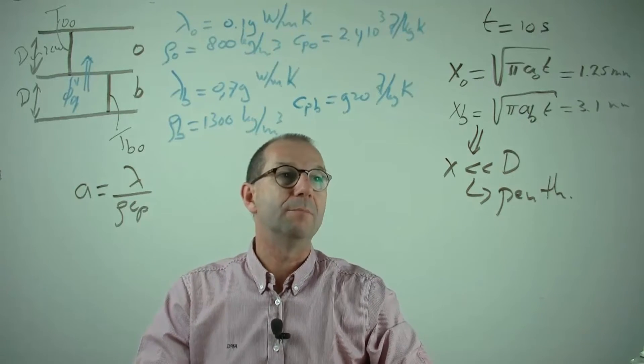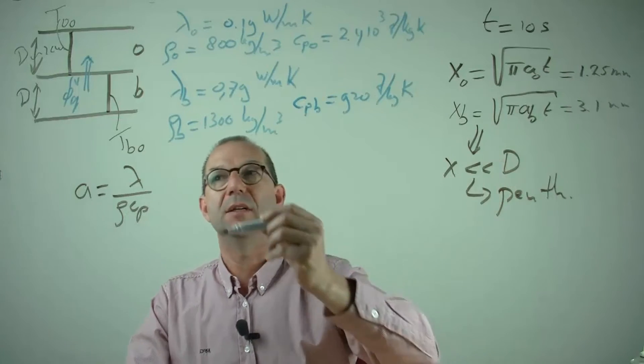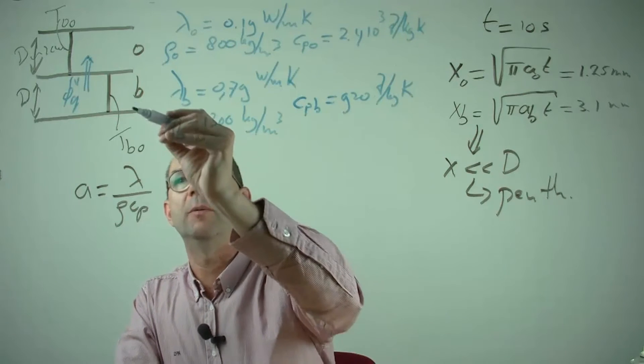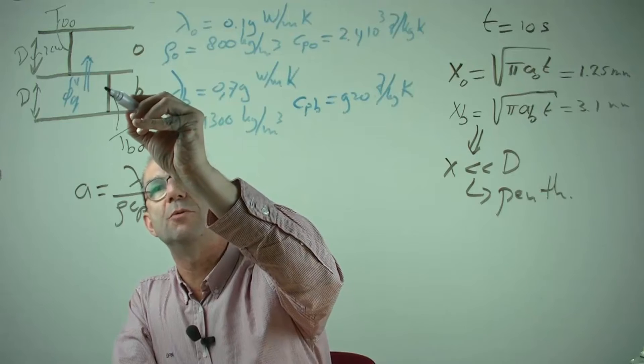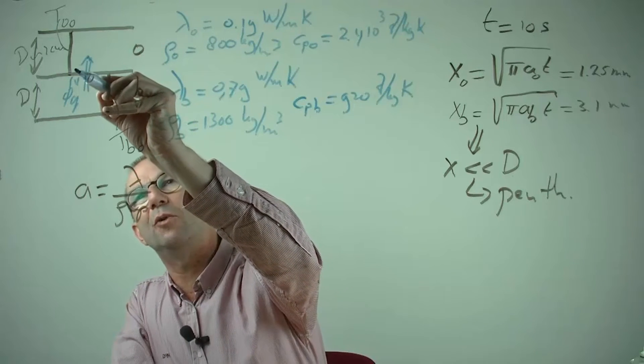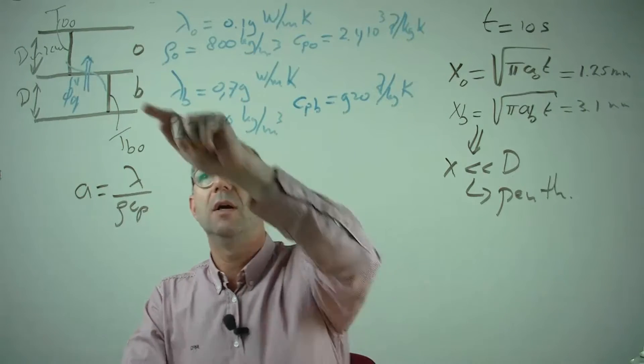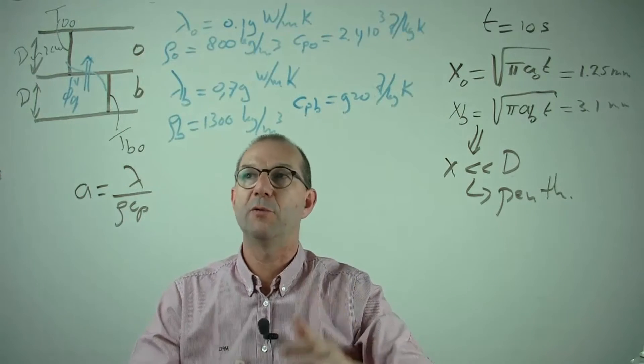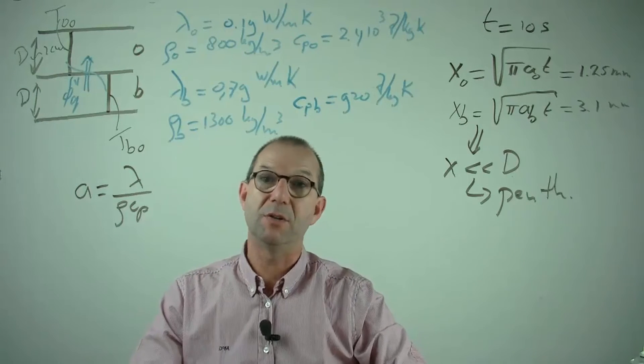Alright, then I can draw how I roughly think this profile, temperature profile will be. It will be kind of 3 mm into the bituminous and then over a much shorter distance into the oak. And then obviously at the far ends away from the interface it will still be the original temperatures, because it's penetration theory.